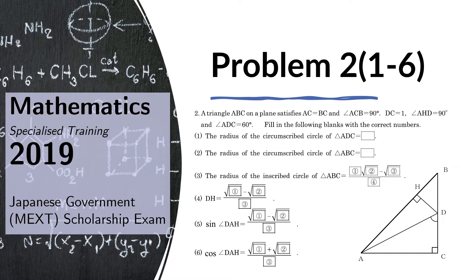In this video, we will answer problem 2. A triangle ABC on a plane satisfies AC equals BC and angle ACB equals 90 degrees, DC equals 1, angle AHD equals 90 degrees, and angle ADC equals 60 degrees.